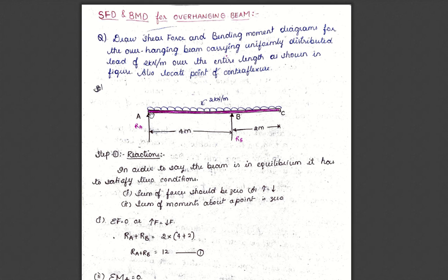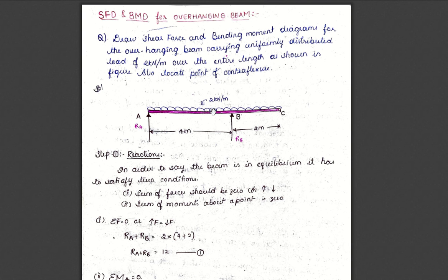This is the question and diagram given. You can see these two supports A and B, and also some portion B to C is overhanged. We can say this is a simply supported portion from A to B, and B to C is the overhanging portion. It is overhanged by 2 meters from the right support B, and it is carrying the uniformly distributed load of 2 kN per meter run over the entire length of the beam.